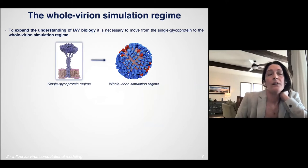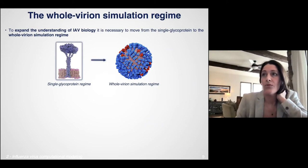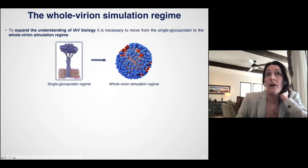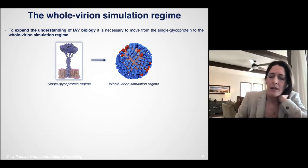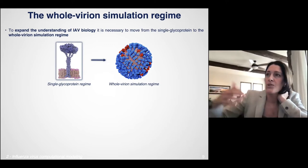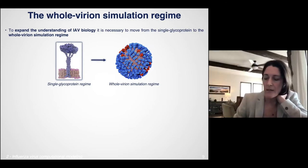We believe that if we really want to understand influenza biology, we need to make the move from studying single proteins to getting to the whole virus. We and others have done a lot of work at the single protein level, but we want to understand how dynamics and other features change when proteins are in their more complex scenes. And if we want to understand emergent behavior, we need to be able to cross these scales more easily.